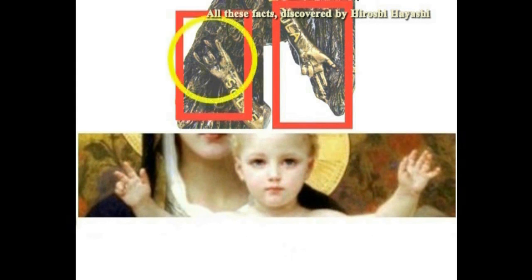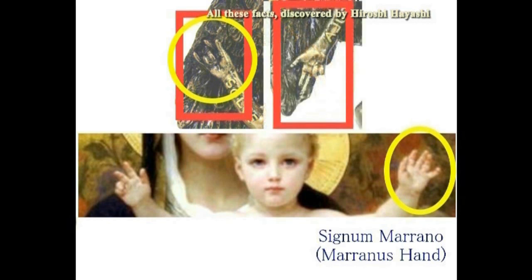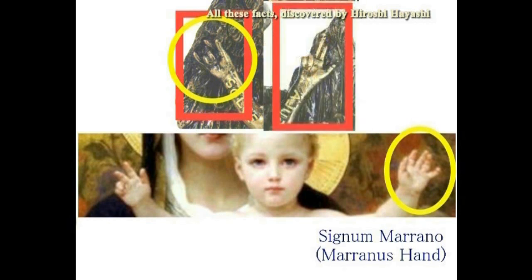右がサバジオスの手です。ブーグローが描いた聖母子において、このイエスの両手に注意してください。同じように、左にサバジオスの手、向かって右にマラナスの手を表現しています。このマラナスの手はイエスのシンボルマーク、そしてイルミナティのシンボルマークとなっています。